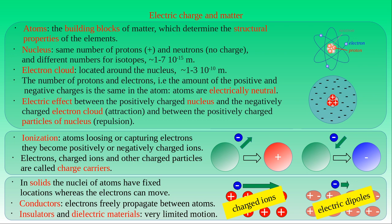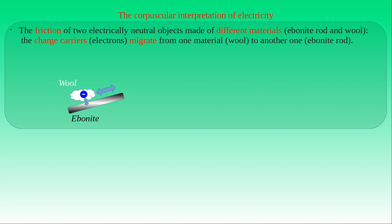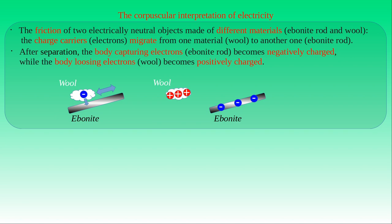Using the model based on atomic physics, we can provide a corpuscular interpretation of static electricity in matter. During the friction of two electrically neutral bodies made from different materials, the charge carriers migrate from one material into the other. In this example, the charge carriers are electrons, and they migrate from the wool into the ebonite. After the separation of charge, the body capturing electrons becomes negatively charged whereas the body losing them becomes positively charged. Therefore, the wool attains positive charge and the ebonite rod attains negative charge. The number of electrons captured by the ebonite rod equals the number of electrons migrated from the wool.